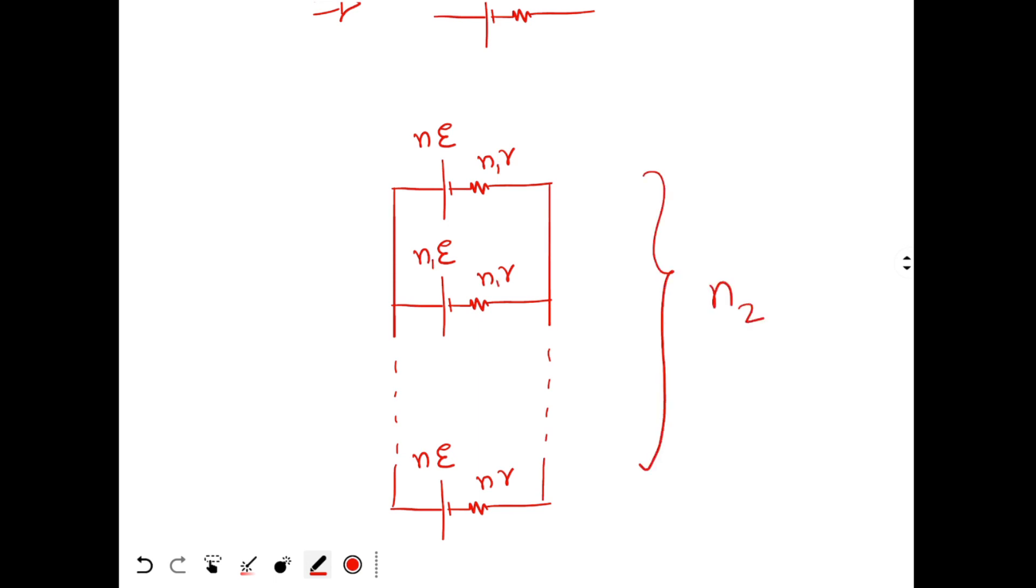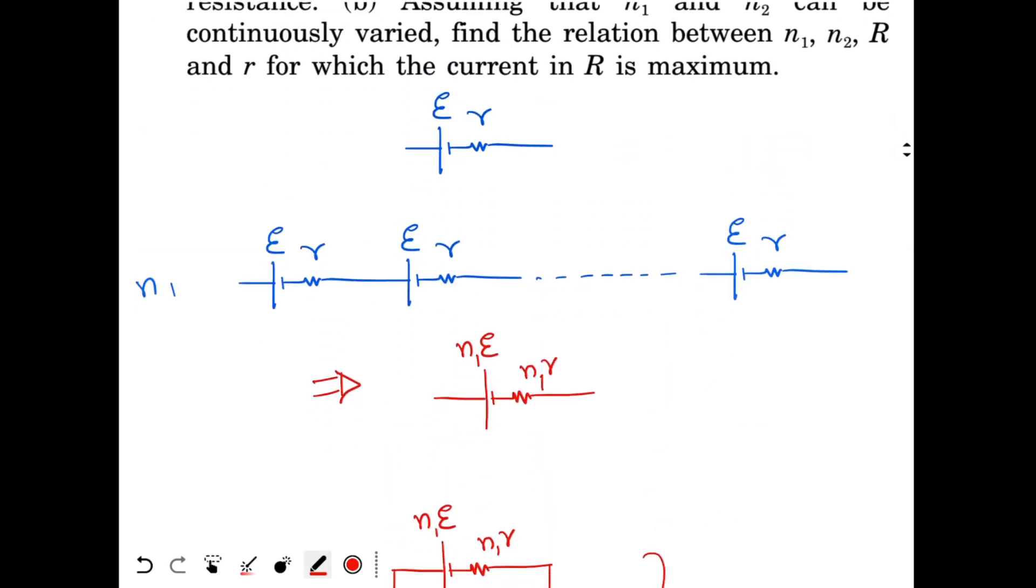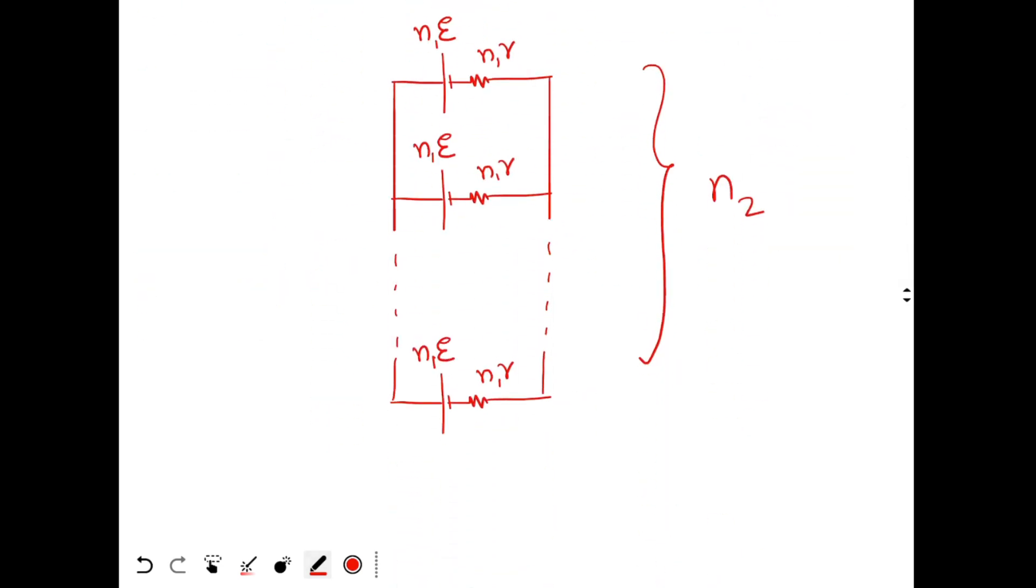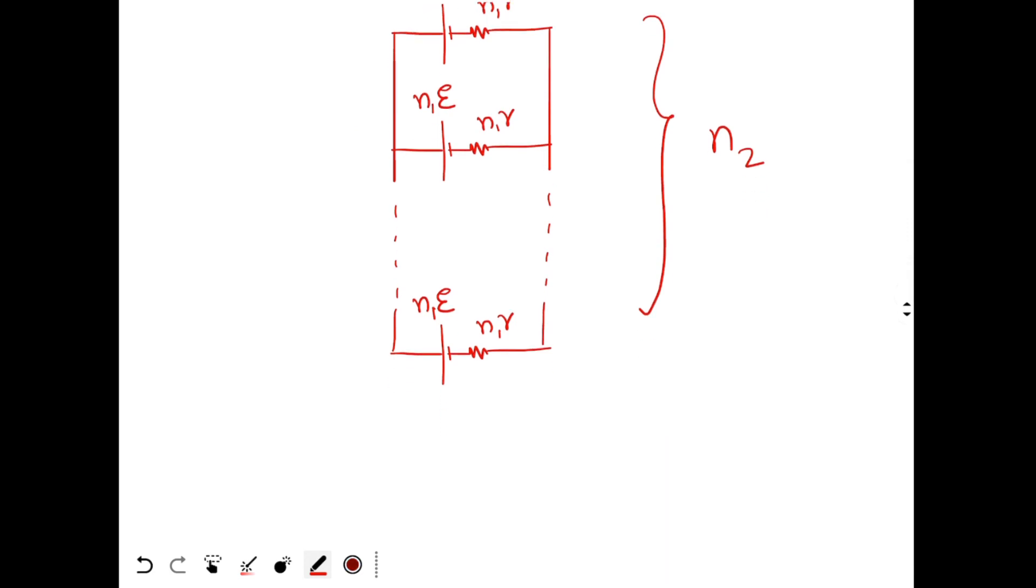Actually I should write N1 over here. I made a mistake. This will be N1. N1 into r. N1 into E. And here I have got N2 such batteries. So when I want to again convert them into one single equivalent battery.